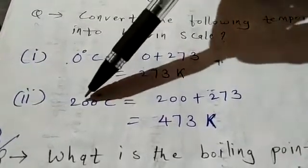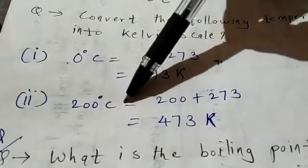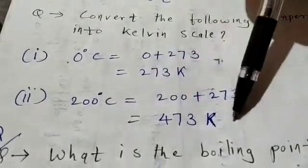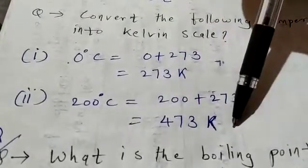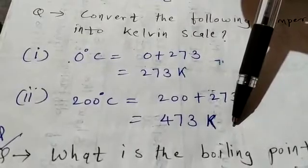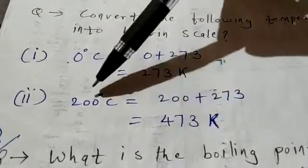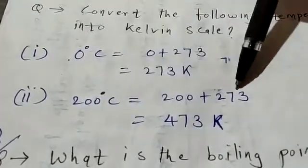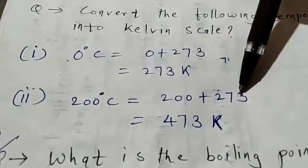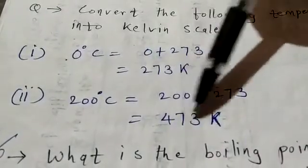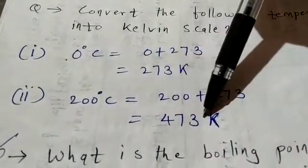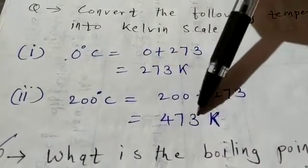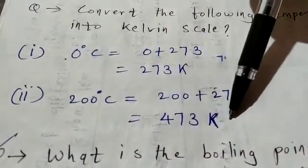Next, 200 degree Celsius, you have to convert to Kelvin scale. So what will you do? Add 273. 200 plus 273 — how much? 473. So, 473 Kelvin.